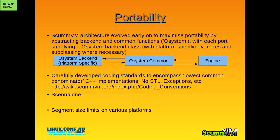ScummVM is designed to be highly portable. That was a fairly early goal of the project, and it evolved to become something much more. The architecture evolved very early on to basically have a well-defined divide between a game engine and all the other functionality associated with that, and then the ports - the actual backends for each individual platform. You can see a little diagram there.